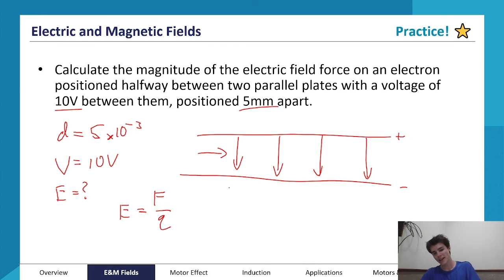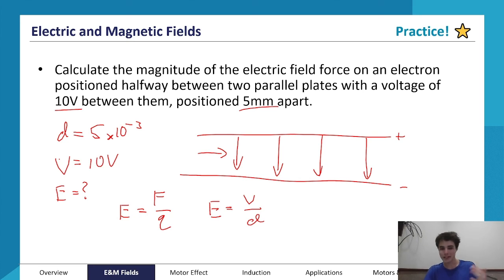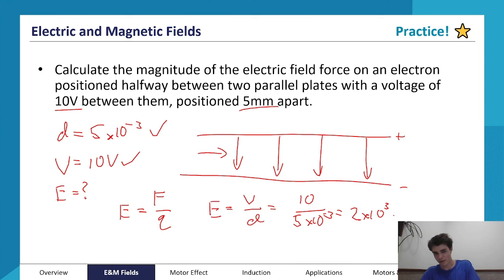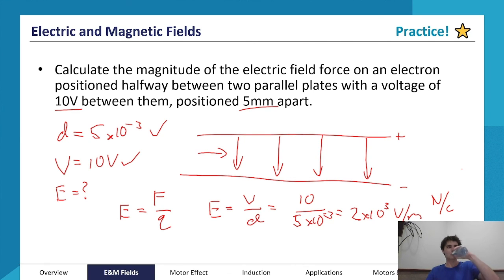Our distance is 5 millimeters — we want it in meters, so that's 5 times 10 to the negative 3. Our voltage is 10 volts. We're trying to find the electric field magnitude E. We have two formulas for E: F = QE, and E = V/d. Since we've been given voltage and distance, we use the second formula: 10 divided by 5 times 10 to the negative 3, which gives us 2000, or 2 times 10 to the power of 3 volts per meter — which is equally correct as newtons per coulomb, since they are exactly the same units.